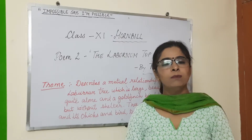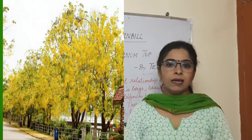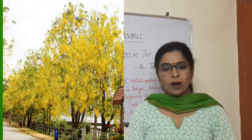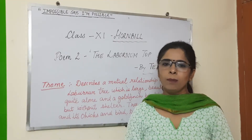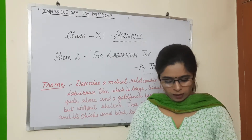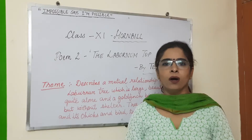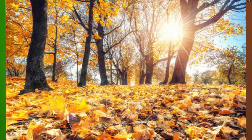The laburnum top — that is the laburnum tree. The top means there is complete silence. The silence is because there is no one; the tree is the only one, and quite still. 'Still' means without any movement. There is no movement in the tree. The time is known as September, which means the autumn season. In the autumn season, normally, the leaves of the trees are shed off.